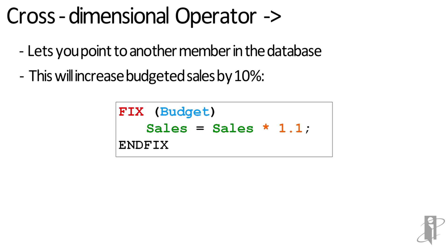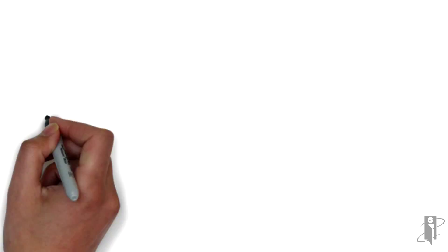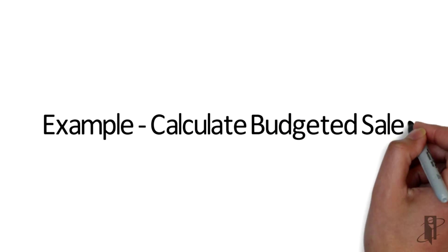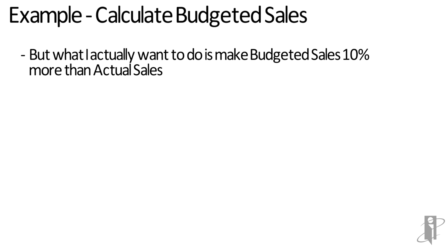So theoretically, every time I run this calc script, it will just increase my budget 10% every single time. Now what I probably want to do is actually just do this one time — based on actual sales, I'm going to make budgeted sales 10% greater.